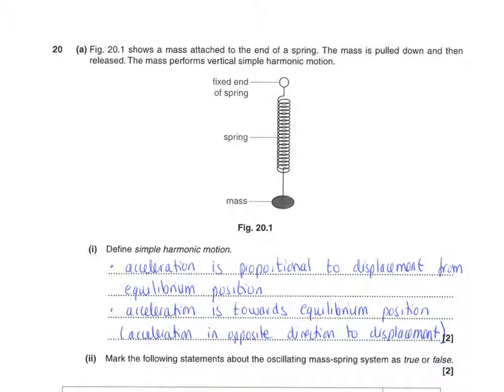This is G484 homework booklet, question 20. A very typical beginning where you have an example of simple harmonic motion, simply a mass on a spring, and you are asked to define simple harmonic motion.